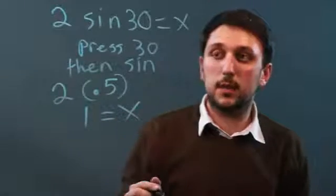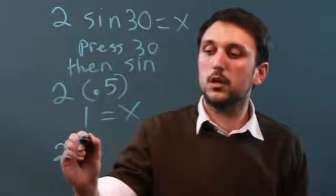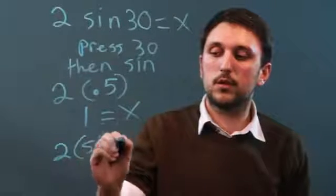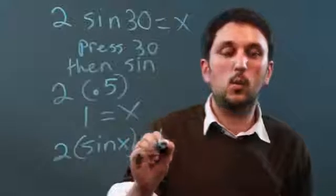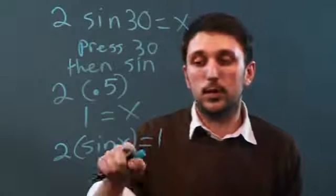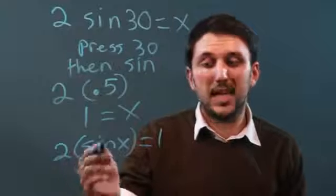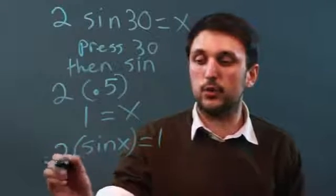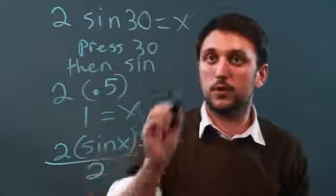The second type of equation you'll see would be 2 sine x equals 1. Now in this case we don't know what x is so we can't do the sine just yet. First we'll divide by 2 and I'll start up again up here.